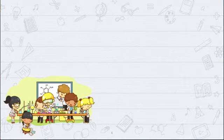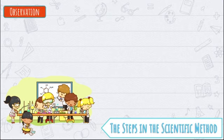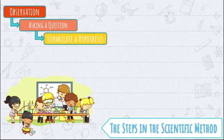The scientific method is made of different steps. The first step is observation, followed by asking a question. After formulating the problem, we are going to formulate our hypothesis. But what is a hypothesis? We will discuss that later.